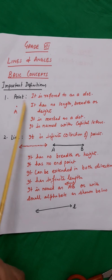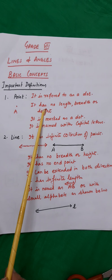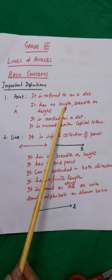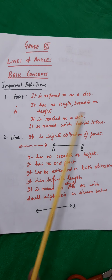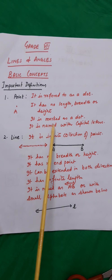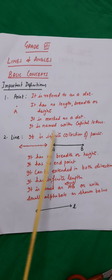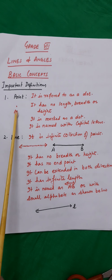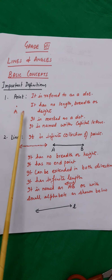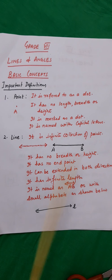Point — it is referred to as a dot. It has no length, breadth, or height. It is marked as a dot and is named with capital letters A, B, C, X, Y, Z, etc.